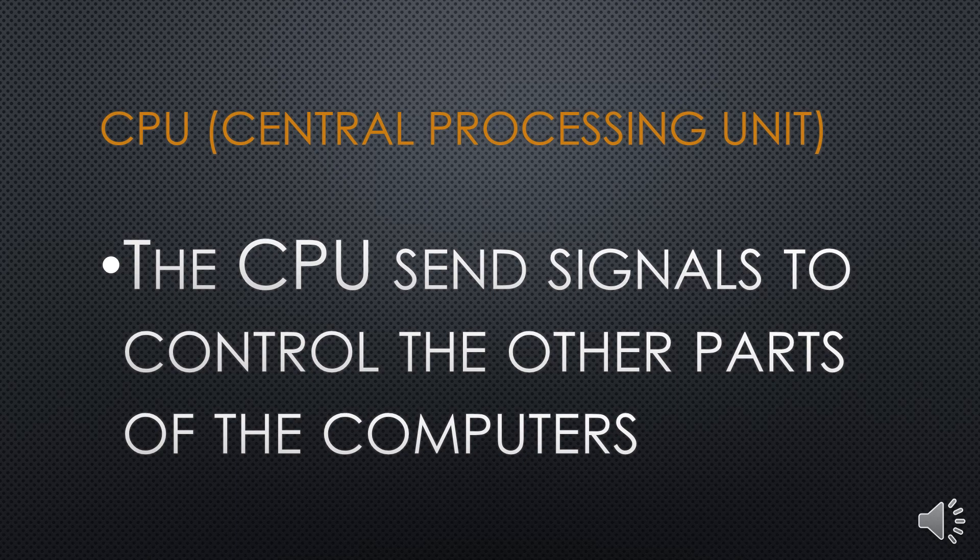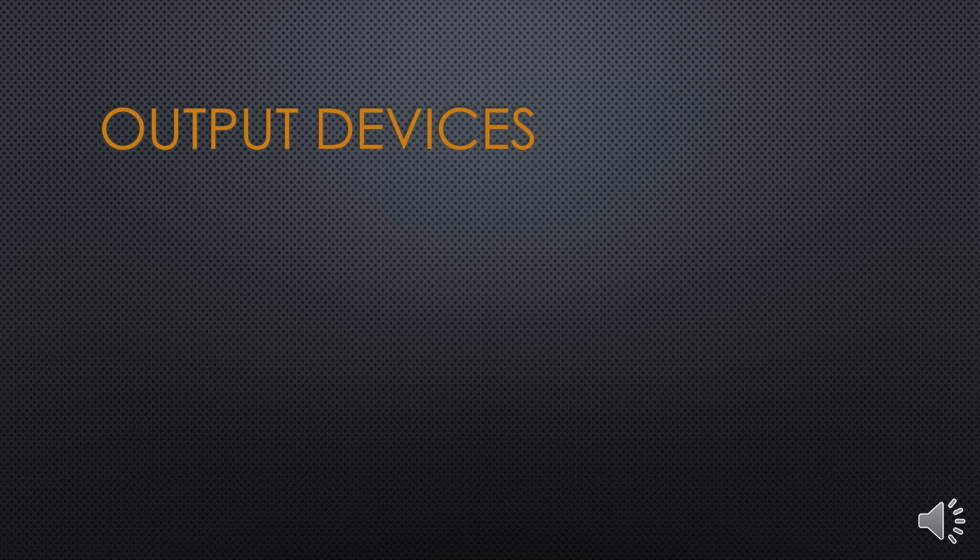The CPU sends signals to control the other parts of the computer. The CPU sends signals to the input device and the output device. All parts of the computer are controlled by the CPU. The hardware devices are controlled by the CPU.